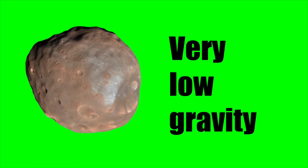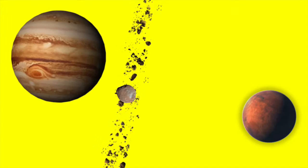Phobos's gravity is very low, so that's why it's in this weird shape. It is believed to be that it was part of an asteroid belt. But then Jupiter's gravity kicked it out and Mars caught it.